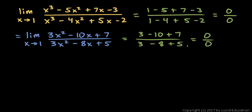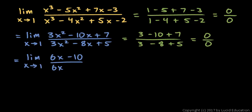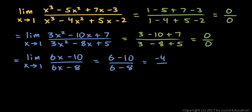In this case it's still an indeterminate form, and the limit can be found by taking the derivative of the numerator and derivative of the denominator and evaluating the limit again. So we can simply apply L'Hôpital's rule a second time. This will equal the limit as x approaches 1 of 6x minus 10 over 6x minus 8. This can be evaluated with a simple substitution: putting 1 in for x gives us 6 minus 10 over 6 minus 8, that's negative 4 over negative 2. The limit is 2.